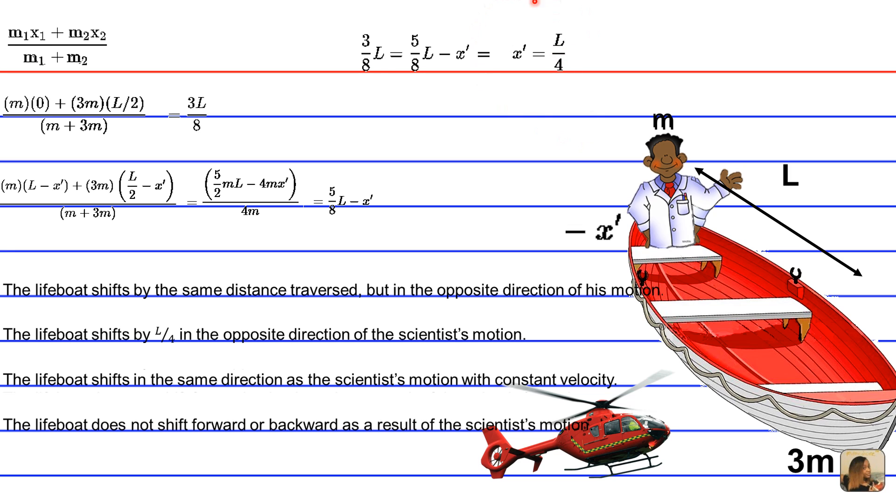So overall, x prime is equal to L over 4. This means that the correct answer choice is going to be the lifeboat shifts by L over 4 in the opposite direction of the scientist's motion. And again,